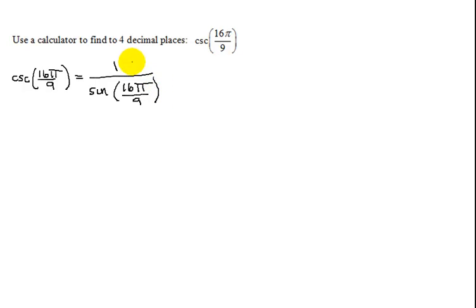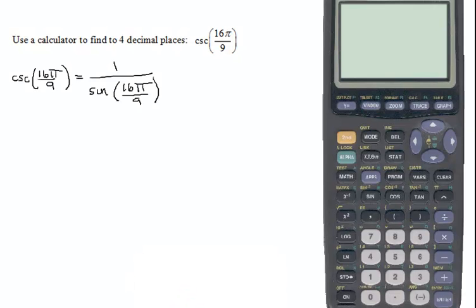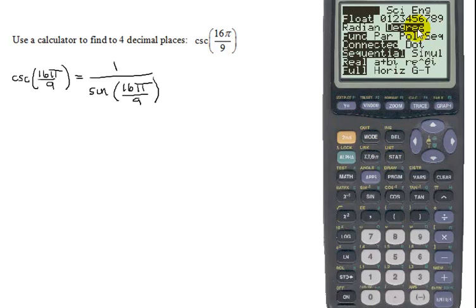So basically, I just have to put this into my calculator, making sure my calculator is in radian mode. Let me go down and get my calculator. I'm using a TI-83+. I'm going to turn it on, check the mode, and notice I'm in degrees, so I need to be in radians. So now I'm in radians.